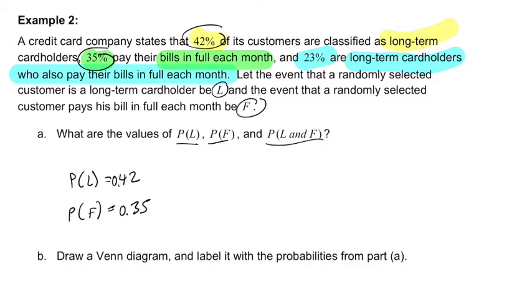And so the probability of being a long-term customer, we've got that. Probability of paying your bills in full. Probability of L and F. So the probability of both happening here is, I guess, one way to look at this.